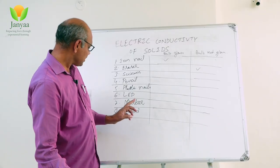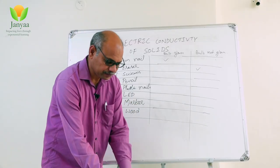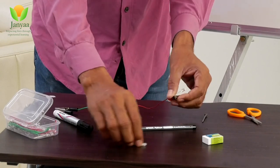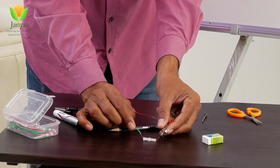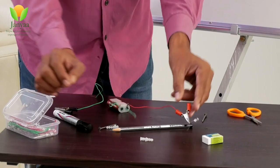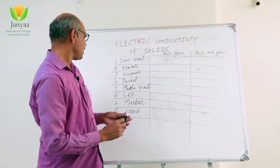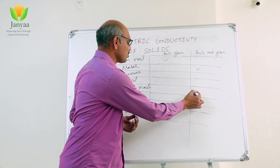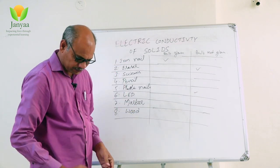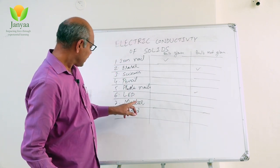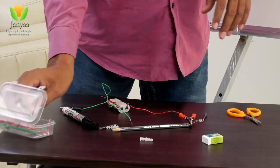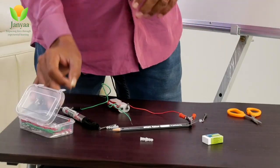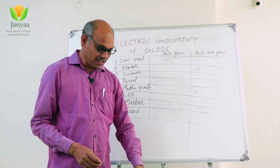Next, let us check the plastic nails. Connect them in the circuit — you can observe the bulb is not glowing. Plastic nails do not allow current to pass through them. Let us also check another LED to confirm the circuit is working.